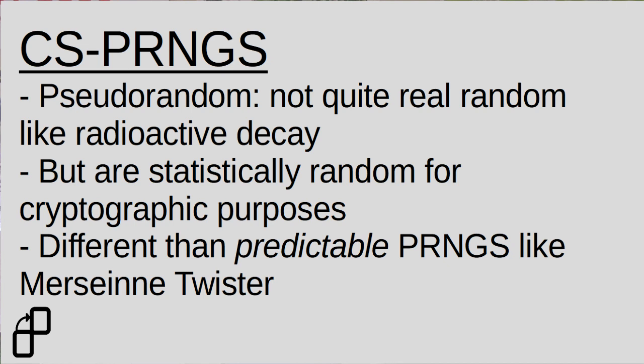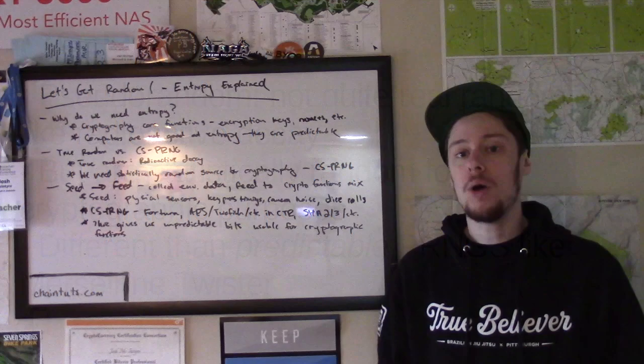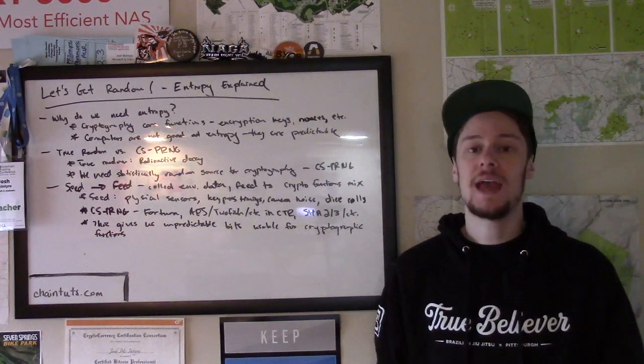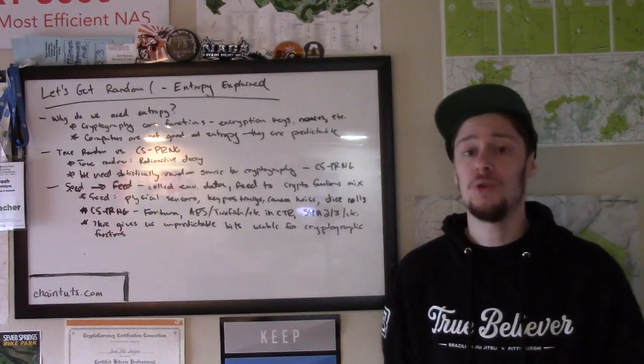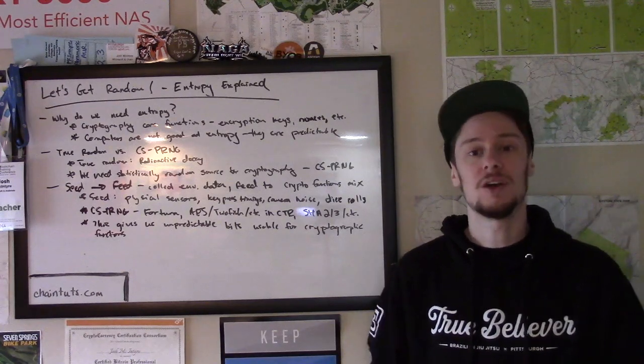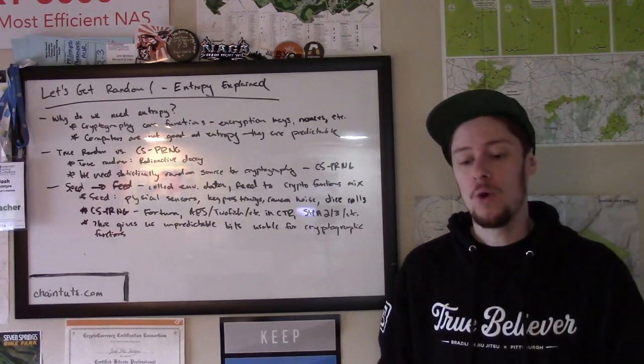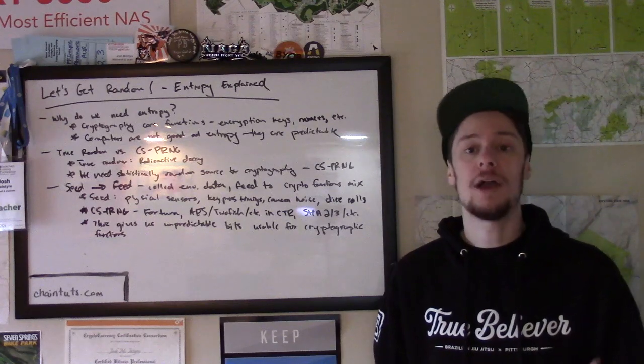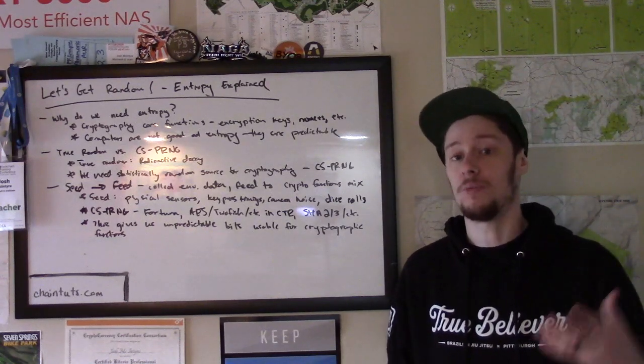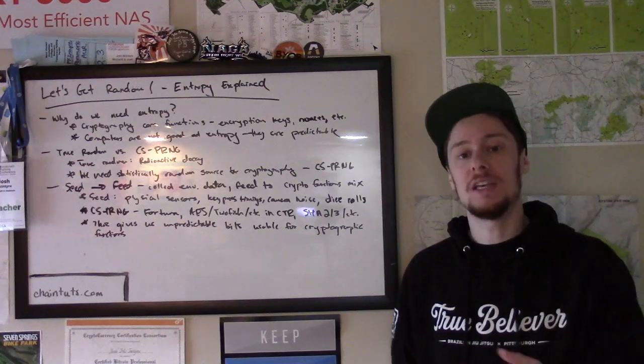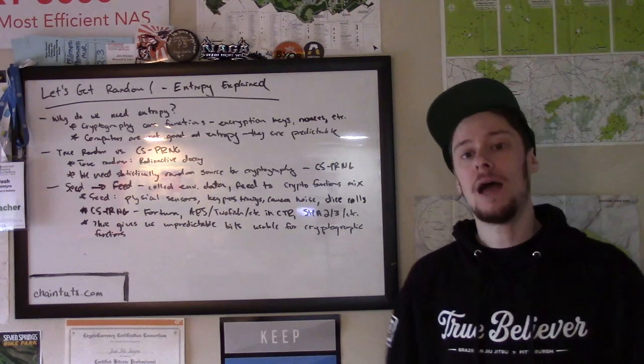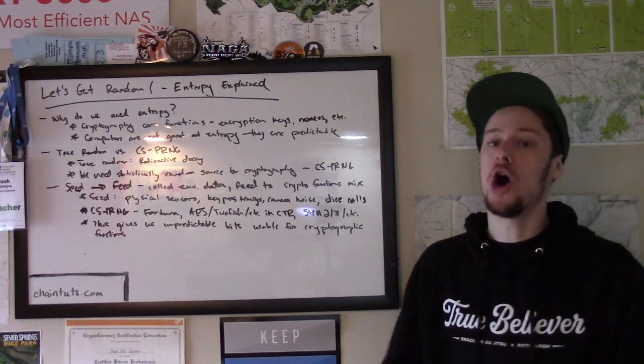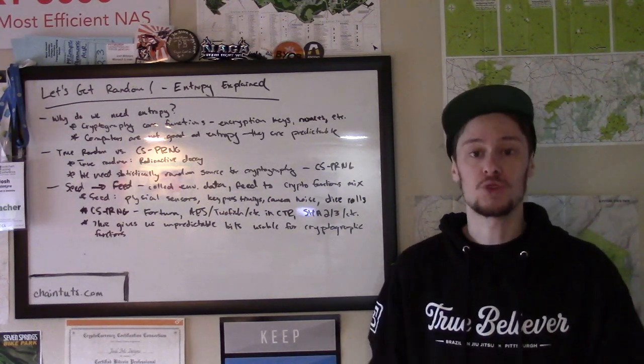So again, why do we need to do all this? Why is there such a deep science to entropy? Well, again, our modern encryption relies very heavily on random values for things such as keys. There's a principle in cryptography, and I hope I'm pronouncing this correctly, called Kerckhoffs's principle, which is you should be able to know everything about how a crypto system works, for example encryption, except for the secret key, and not be able to break the encryption.